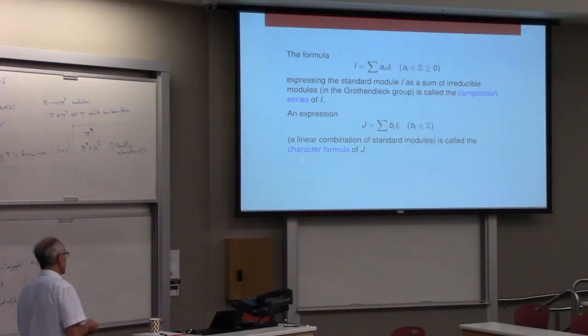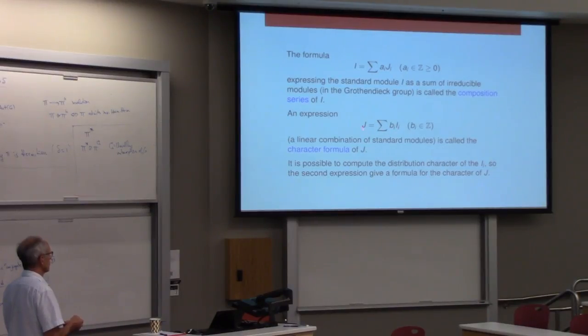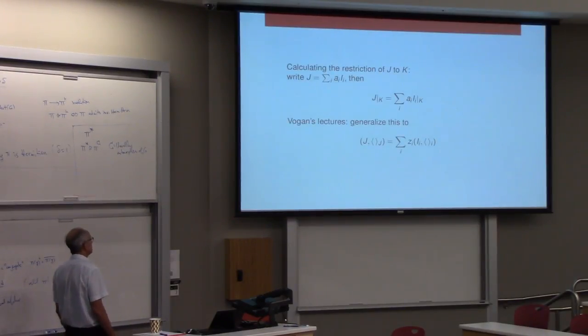And this is called the character formula because, just, well, I mentioned K-types, but also the global character. I think I said something about it here. Yeah, they're formulas for the distribution character of these standard modules. And therefore, if you have a formula like this, you get a formula for the character of J. That's why this is called the character formula. And also K-types. This gives you a formula, if you know these K-types, gives you a way to calculate the K-types of an irreducible representation.